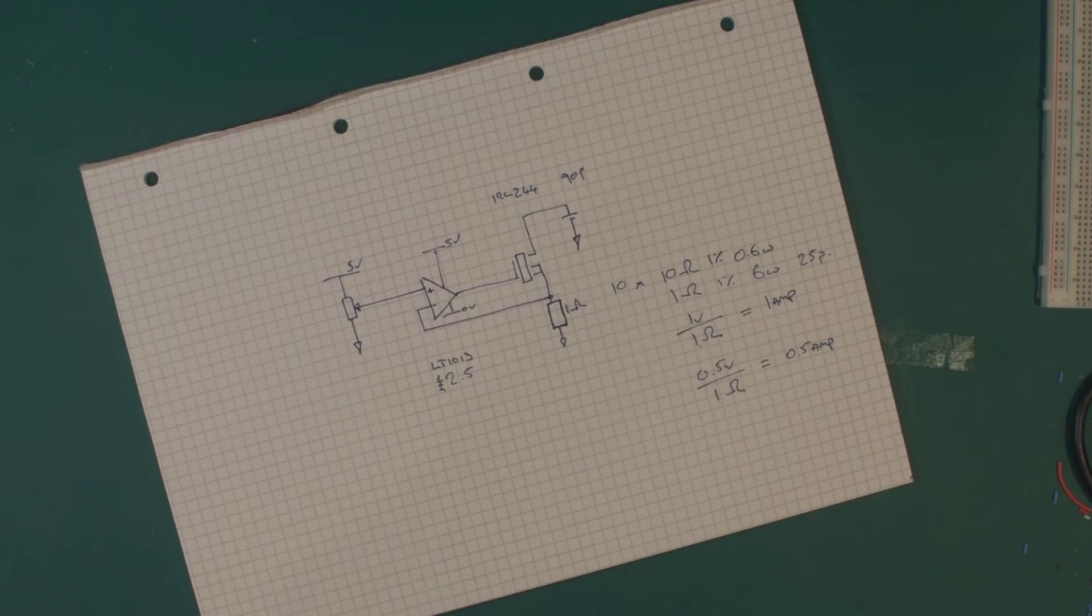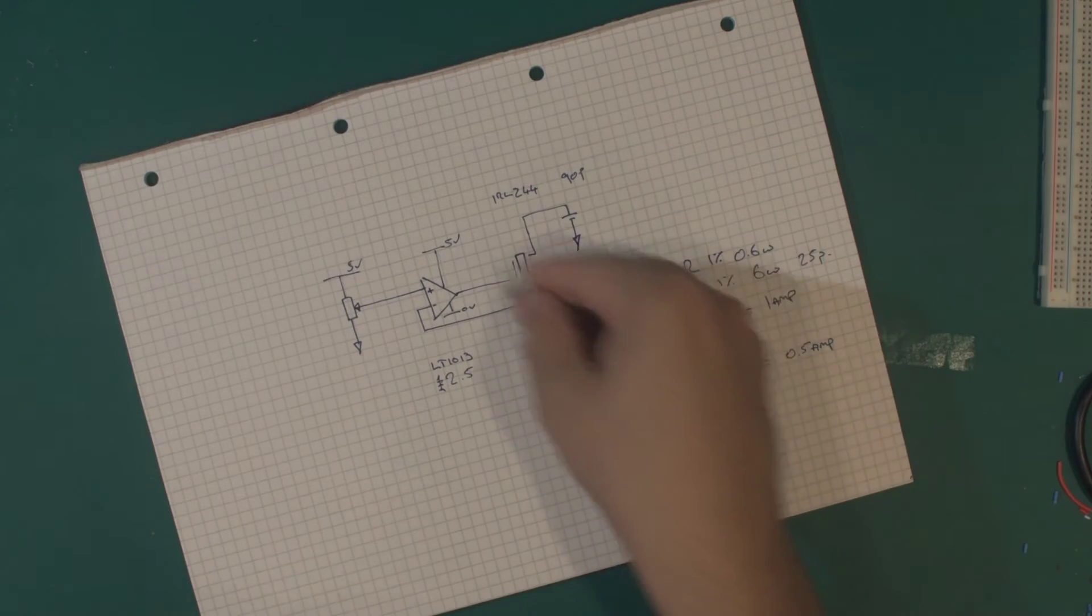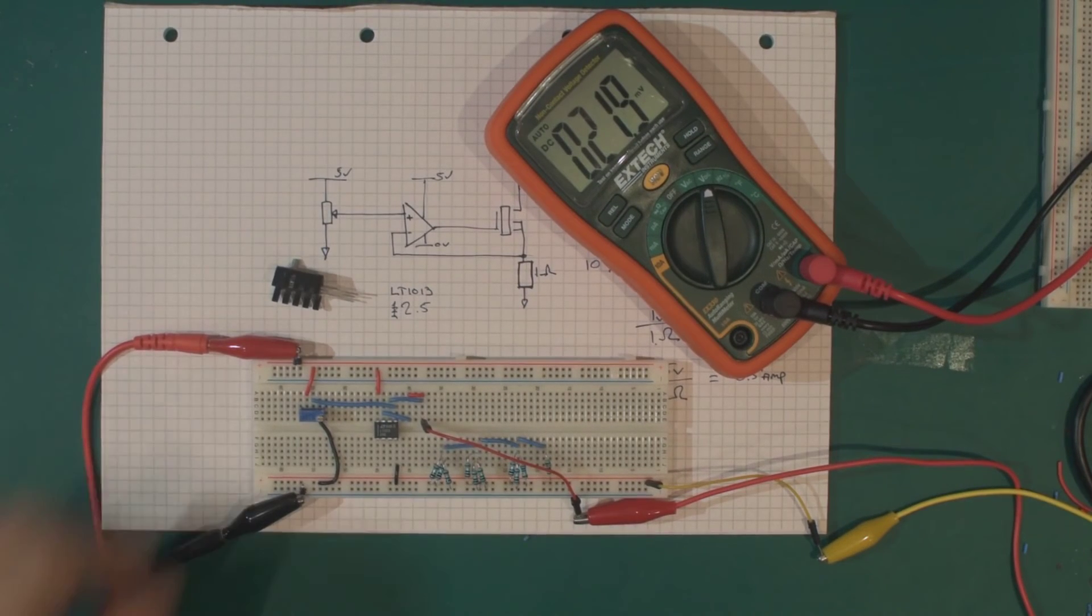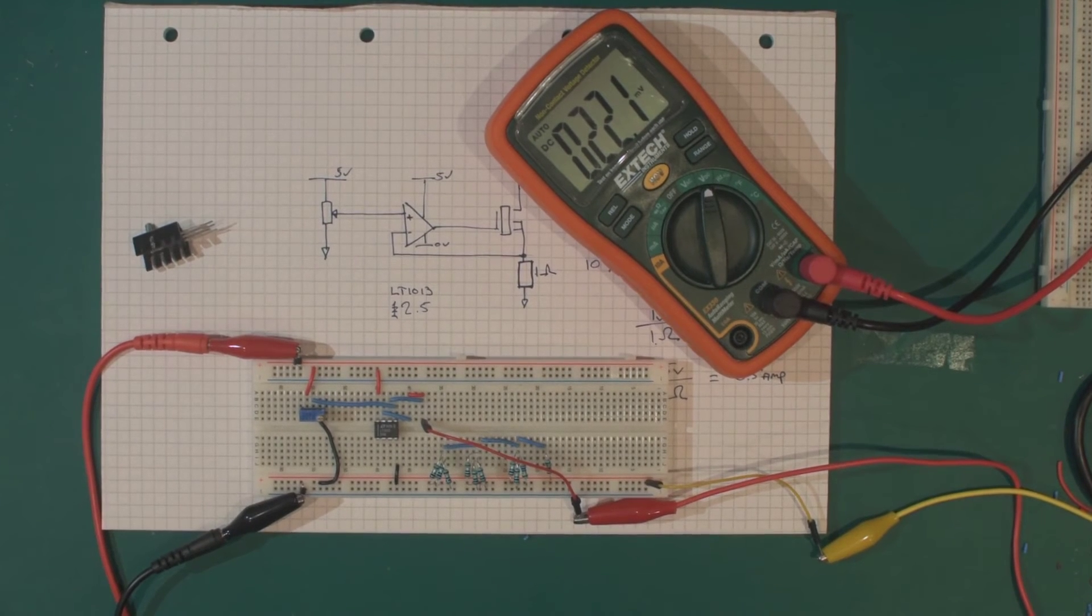So here I have the MOSFET, the amplifier, and the ten resistors. I'm now going to take all this and get it on a breadboard so we can test it out. Okay, here we go. I have on here now the pot, the amplifier, and the ten 10-ohm resistors all connected up.